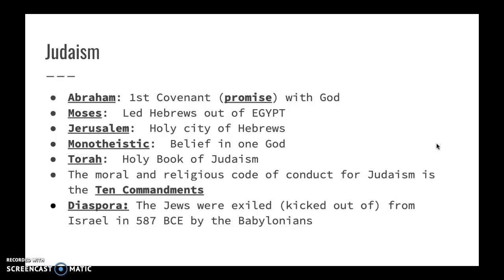Judaism developed in Mesopotamia, and the Hebrews developed along the Mediterranean Sea in the Jordan River Valley. They trace their religion back to Abraham, who made the first covenant — a promise with God — who said he would help develop his people. Moses was one of the main figures in Judaism, as he led the Hebrews out of slavery in Egypt. The Hebrews believe Jerusalem is their holy city. They are monotheistic, believing in one God. Their holy book is the Torah, which makes up most of the Old Testament. They follow a religious code of laws called the Ten Commandments. They also had a period of diaspora, when the Jews were exiled from Israel by the Babylonians and spread out far after that.